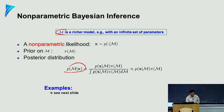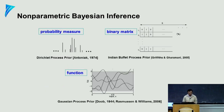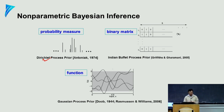Here are some popular nonparametric Bayesian models. The Dirichlet process allows you to define a prior over mixture models. The Indian Buffet Process, which I hope was covered well last lecture, allows you to define a binary matrix so that for every data point you can select the subset of features that is active. We're going to talk about Gaussian processes next week.